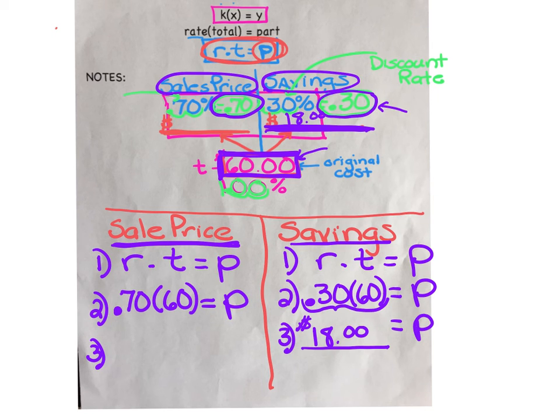Please write down all these notes. And now, punch into your calculator, 0.70 times 60. And when you're ready, write your answer down. Pause the video if you need time to take the notes. We owe the store $42. That's the part we have to spend for this particular jacket.